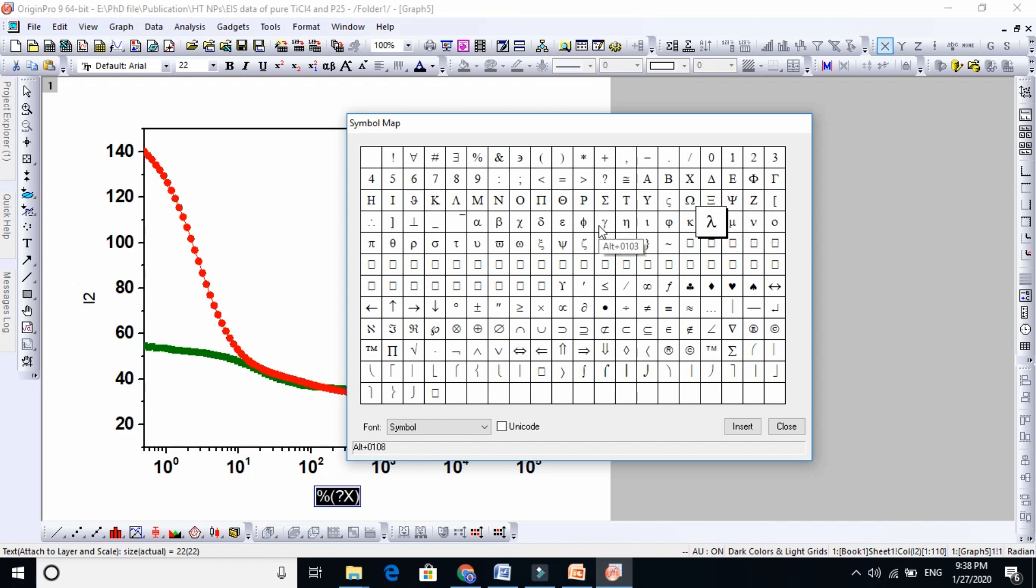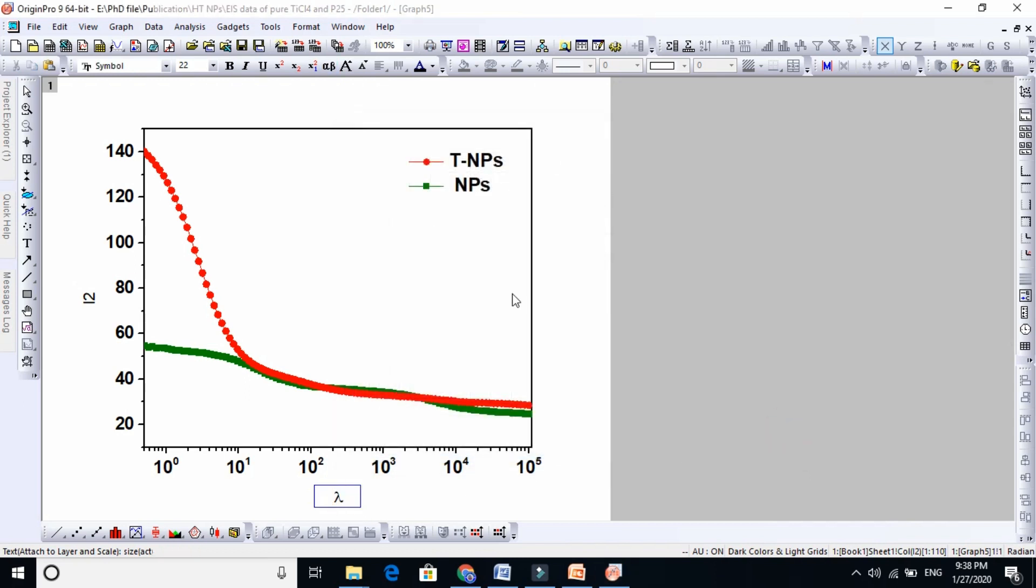All symbols are here: mu, efficiency, gamma, epsilon, beta, alpha, gamma, pi, theta. I'm interested in this lambda. Now just click here and insert, so lambda appears here. Basically the lambda is now here.